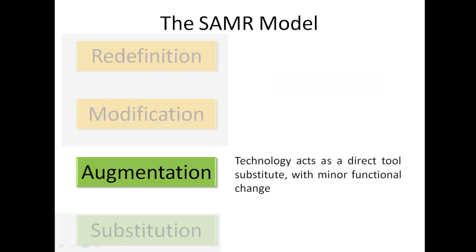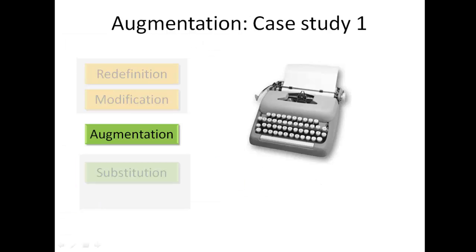Just to repeat: Augmentation — the A stage of the SAMR model — is where technology acts as a direct tool substitute with minor functional change and improvement. So let's see some examples.